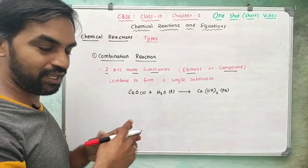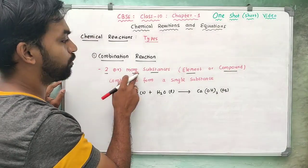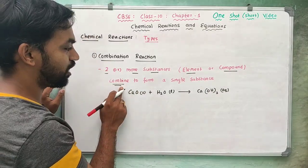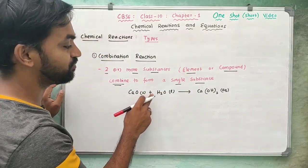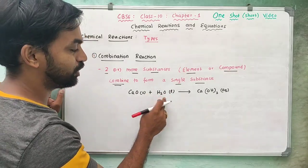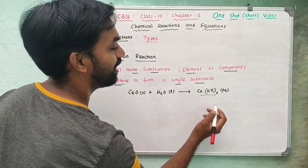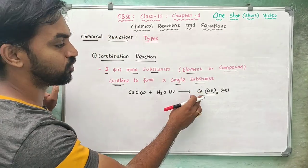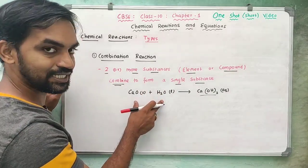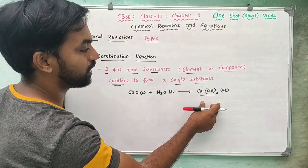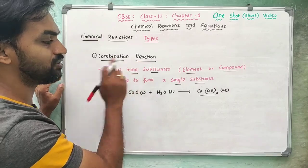Combination reaction: two or more substances combined to form a single substance. For example, calcium oxide (solid) plus water H2O (liquid) combined gives calcium hydroxide — that is lime or slaked lime. This is a combination reaction where two reactants on the left side combine to form one single substance.